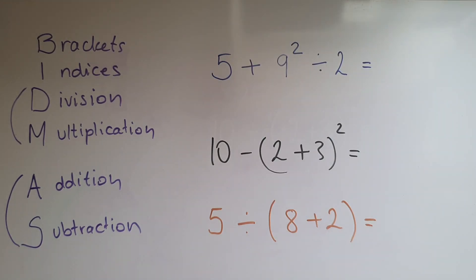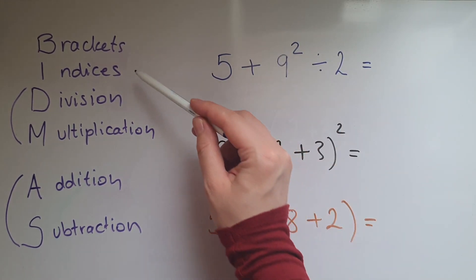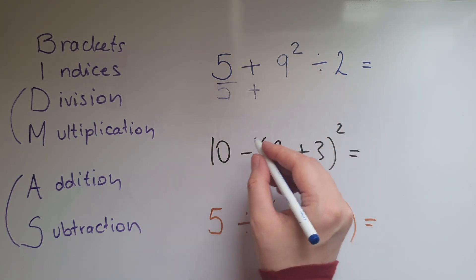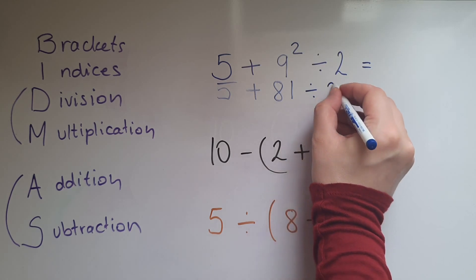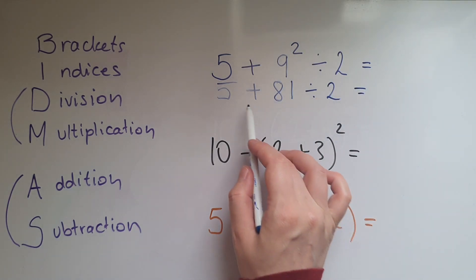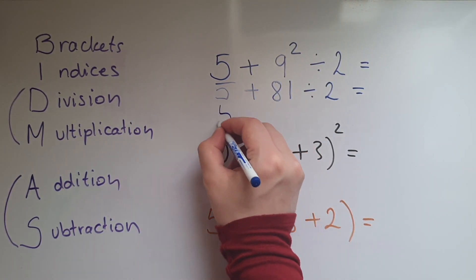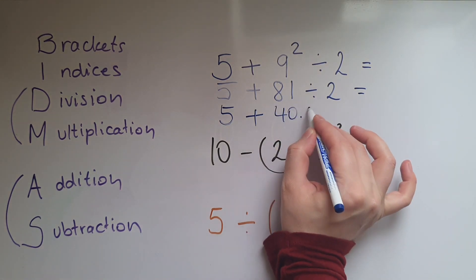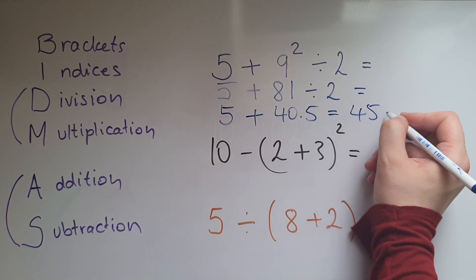Looking at a few more examples: 5 add 9 squared divided by 2. We haven't got any brackets, so we start with indices — 9 squared is 81. Now we have 5 add 81 divided by 2. Division comes before addition, so 81 divided by 2 is 40.5, then add 5 to get 45.5.